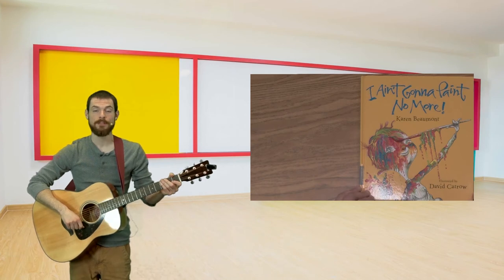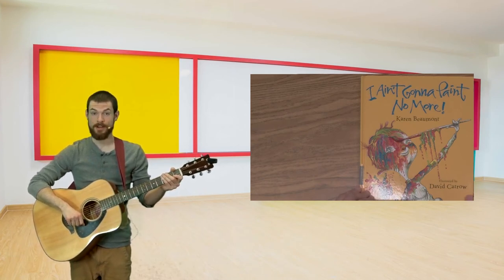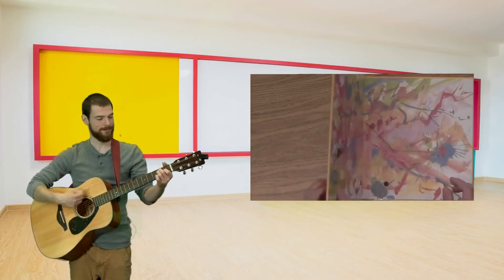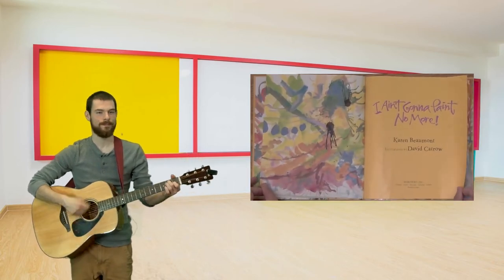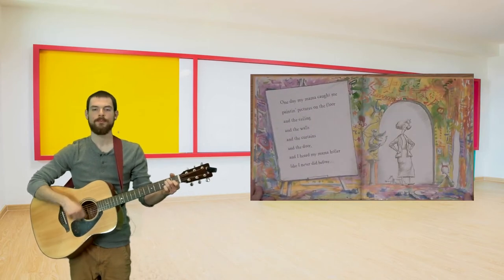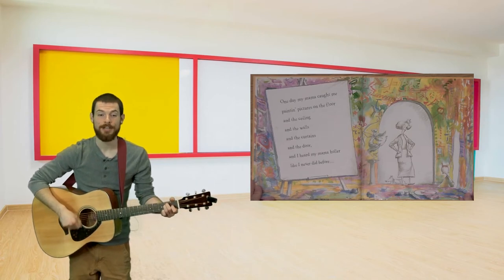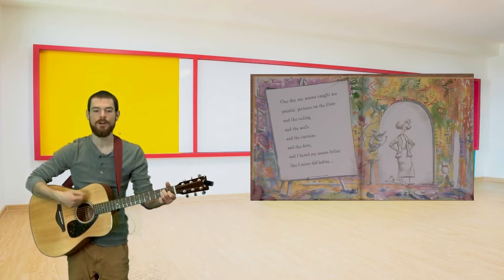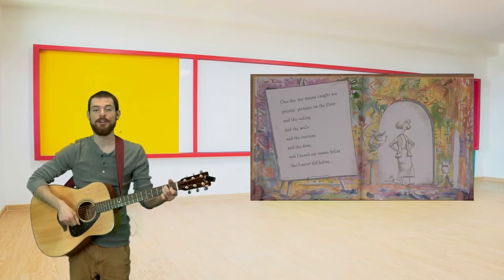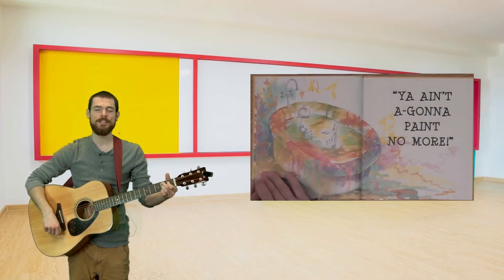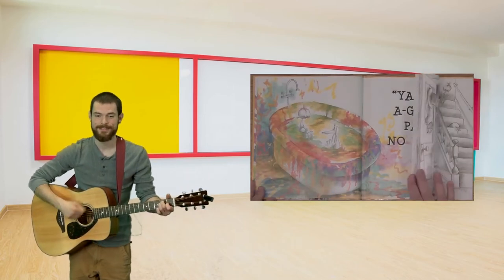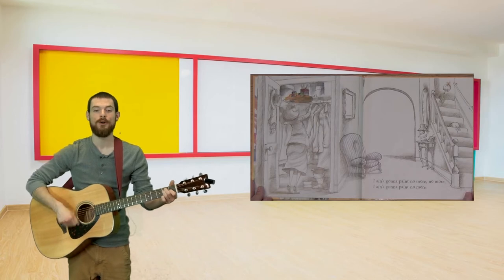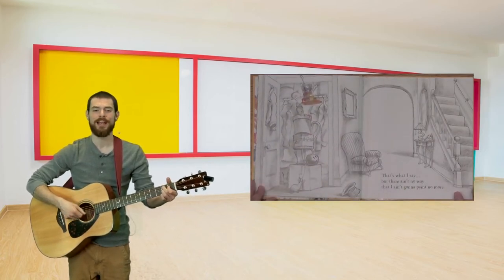Hey, everybody. I have brought a book today called I Ain't Gonna Paint No More. And what's cool about this book is we can actually sing it. You guys ready? Here we go. One day my mama caught me painting pictures on the floor and the ceiling and the walls and the curtains and the door. And I heard my mama holler like I never heard before. You ain't gonna paint no more. Well, I ain't gonna paint no more, no more. Ain't gonna paint no more. That's what I say, but there ain't no way that I ain't gonna paint no more.